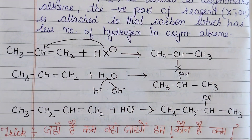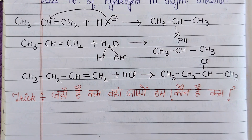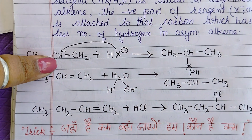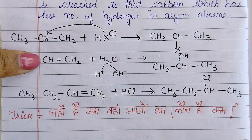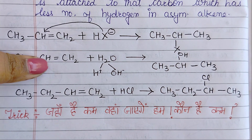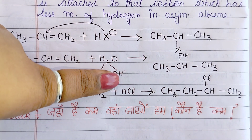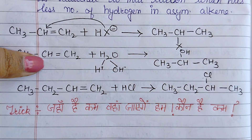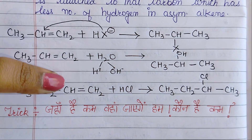The trick is: wherever the hydrogen is less, the negative part will go. So, who has fewer hydrogens? That is CH. So H2O splits — H, which is positive, is removed, and OH, which is the negative part, attacks the carbon that has fewer hydrogen atoms.